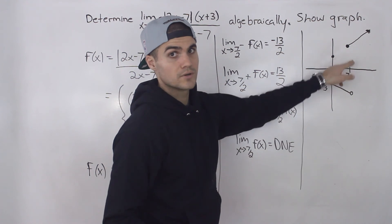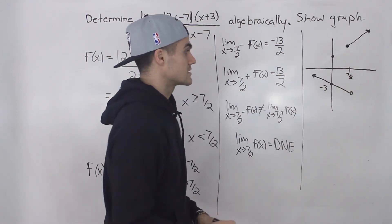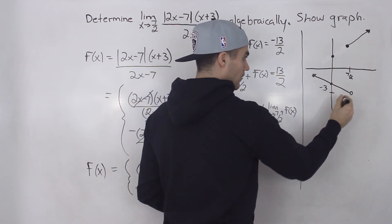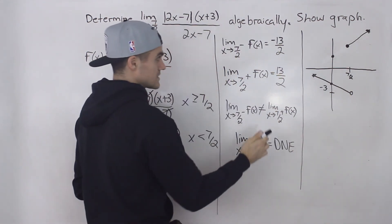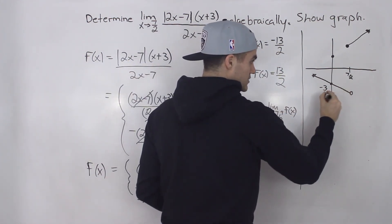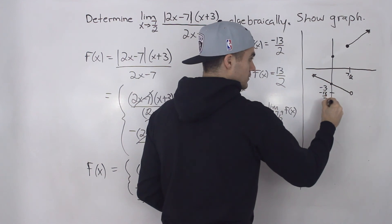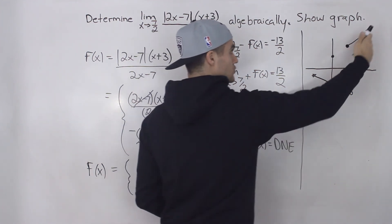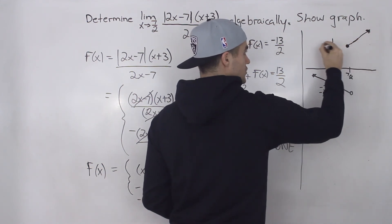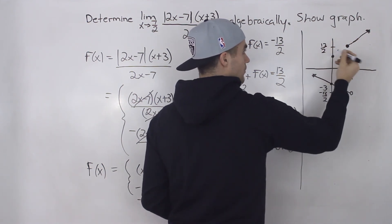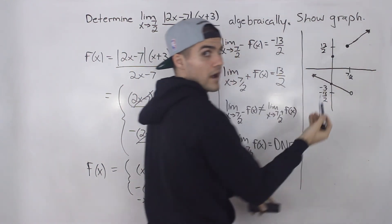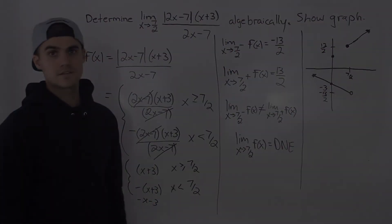There is a discontinuity at x equals 7 over 2. As we approach from the left, the y value approaches negative 13 over 2 — that's where the hole is. As we approach from the right, the y value approaches positive 13 over 2. Because the function approaches two different y values from each side, the limit does not exist.